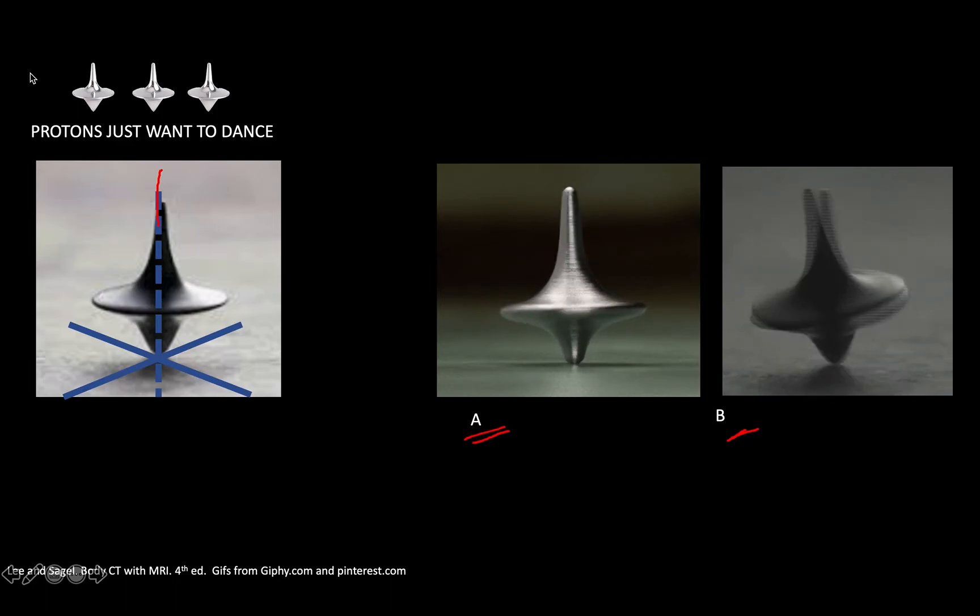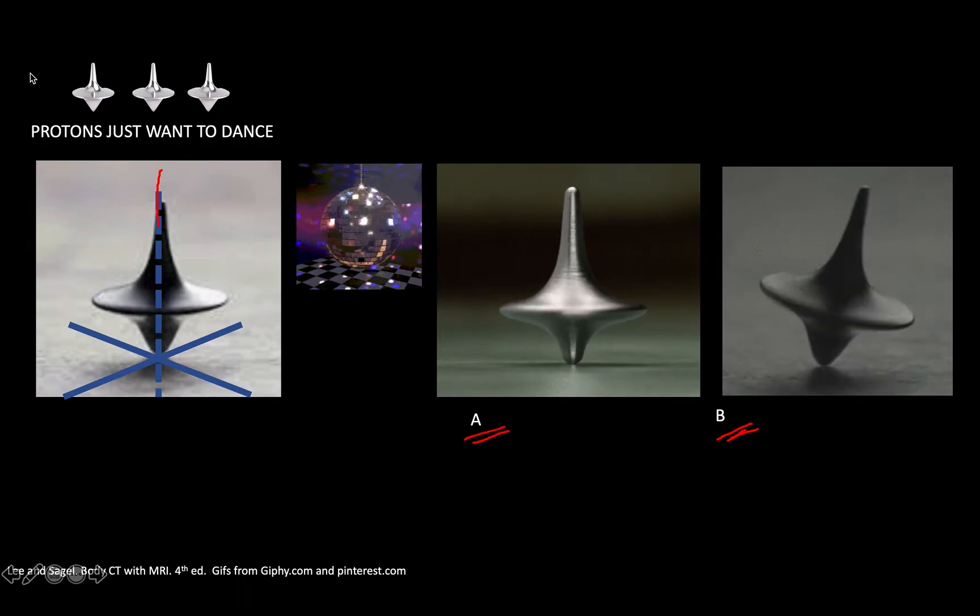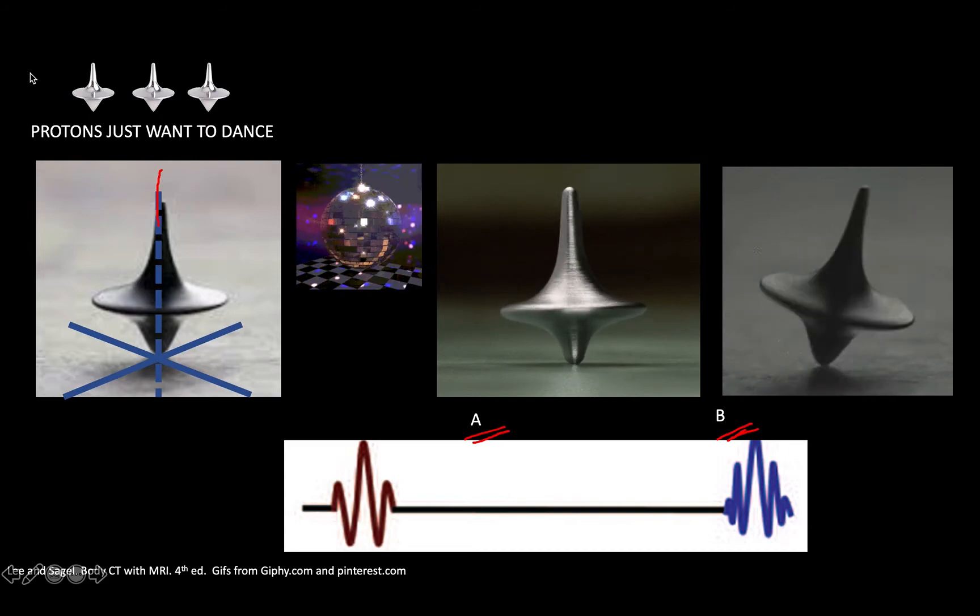Now how are we going to induce these protons to dance? For these protons to dance, we have to give it some extra energy. This extra energy is given in the form of RF pulses. This is the representation of the RF pulse given, making these protons dance. These RF pulses are shown in books as this zigzag line. This is the RF pulse which makes them dance.